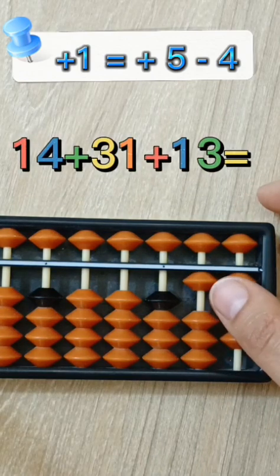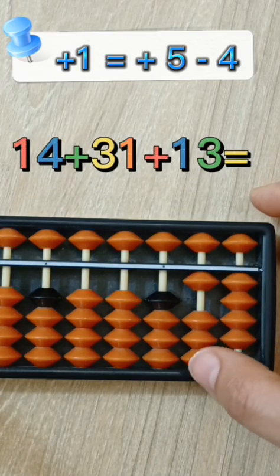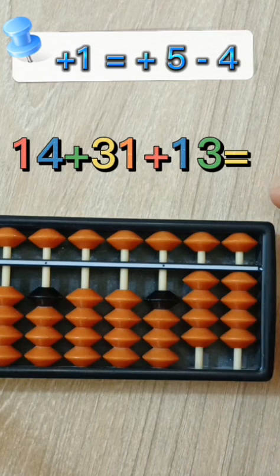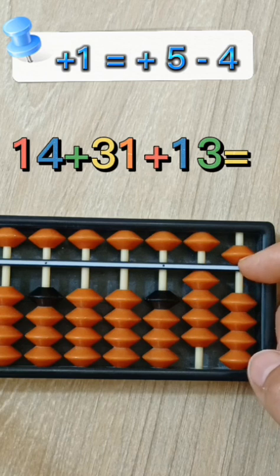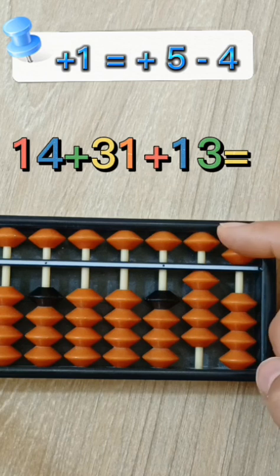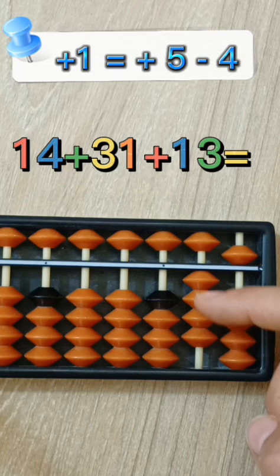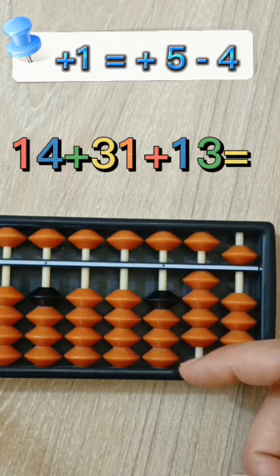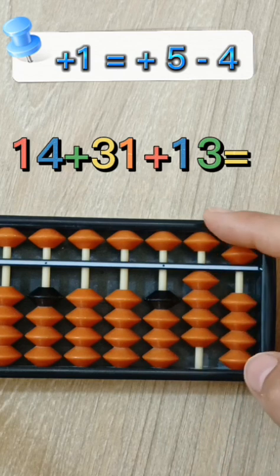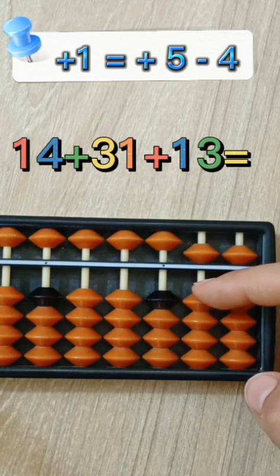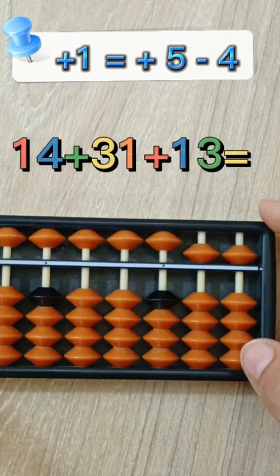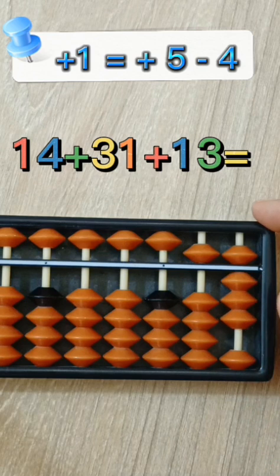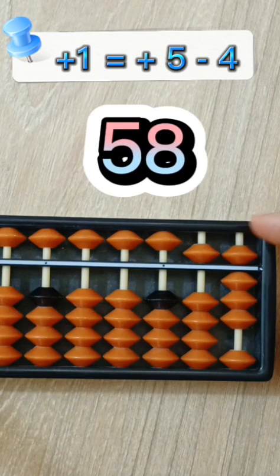14, 31, 30. Let's put 1. 5 minus 4. 13. Let's put 10. That's 1 in the tens place. How can I put 1 here? 5 minus 4. And here, we should add 3. So, the answer is 58.